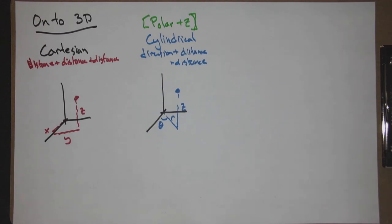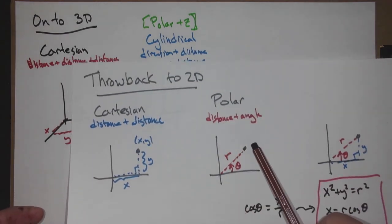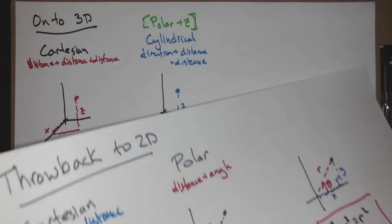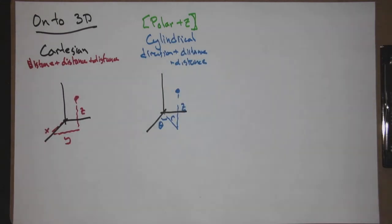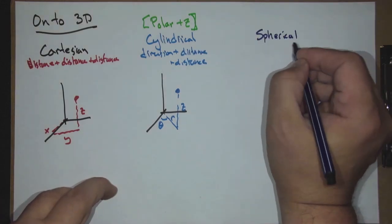Think of cylindrical as polar plus Z — that's what cylindrical coordinates are. It's polar coordinates down in the XY plane, and Z tells us how far we go off the plane. But we can do more. The last system says: think back to 2D polar, where you move directly from the origin to your point. Wouldn't it be cool to do that in 3D? Yes, we can. This last system is called spherical.